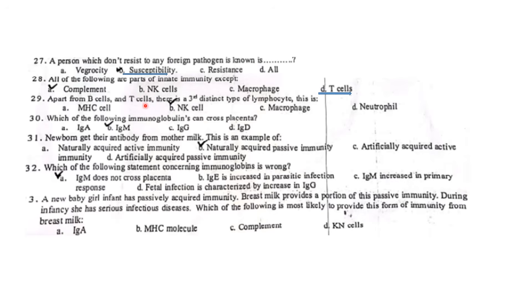Apart from B cells and T cells, there is a third distinct type of lymphocytes called natural killer cells. Which of the following immunoglobulin can cross the placenta? IgG can cross the placenta. Newborns get their antibody from mother's milk. This is an example of naturally acquired passive immunity.